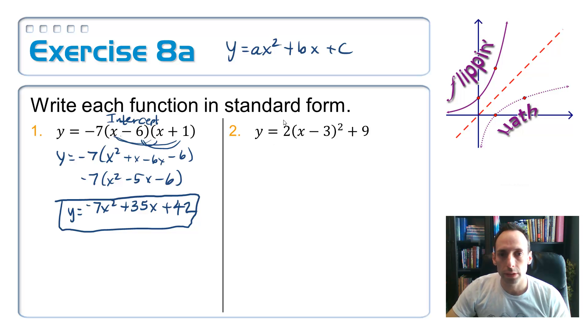Number 2, this one is in vertex form. Vertex being that 3, 9, in case you were wondering. Let's put that in standard form. So we'll have to expand out this binomial. We'll have to square it out.